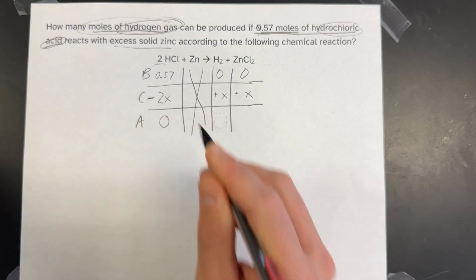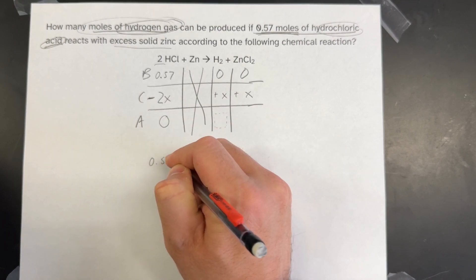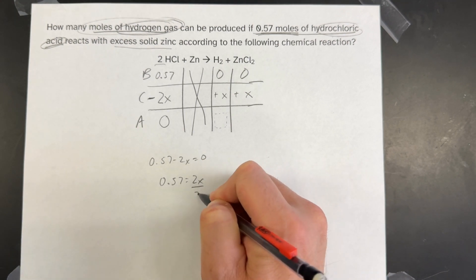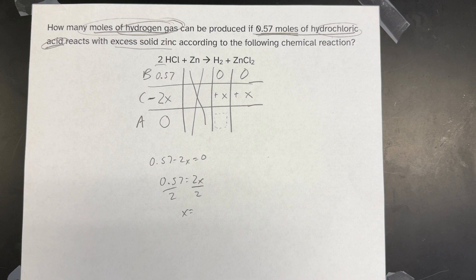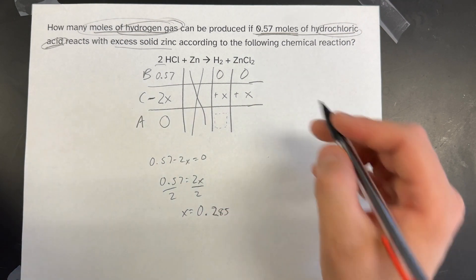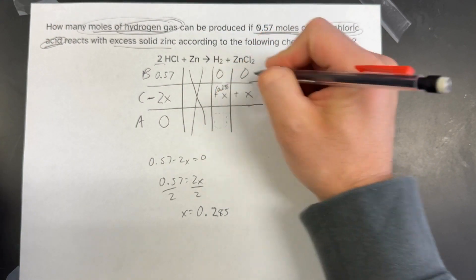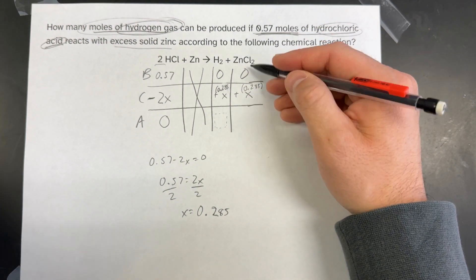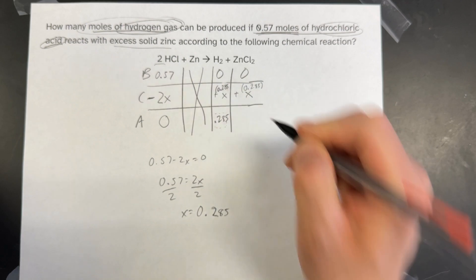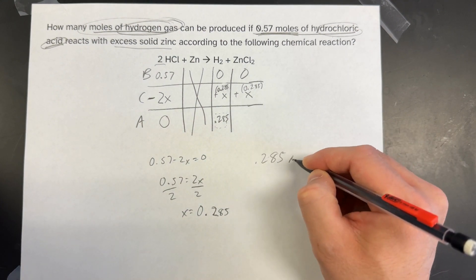After the reaction has finished, you'll have zero of your reactant remaining. Now that I have an entire column filled in, I can write 0.57 minus 2X equals 0 and solve for X: 0.57 equals 2X, divide both sides by 2, so X equals 0.285. Plugging in my X value, 0 plus 0.285 gives me 0.285. The question asked for moles of hydrogen gas, and the numbers from the table are already in moles, so the answer is 0.285 moles of H2.